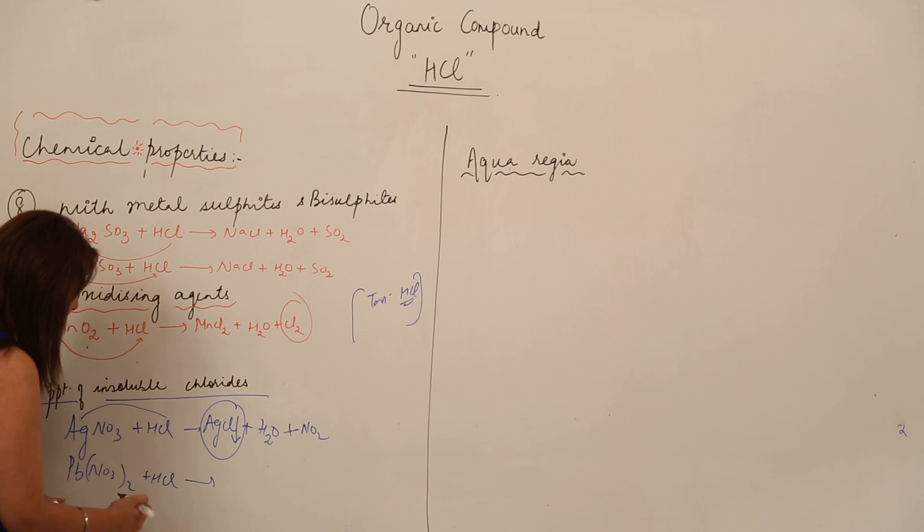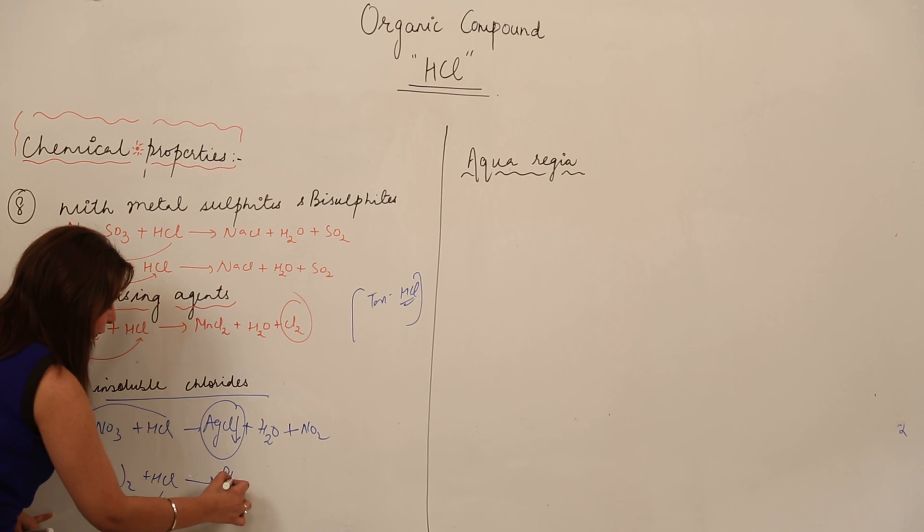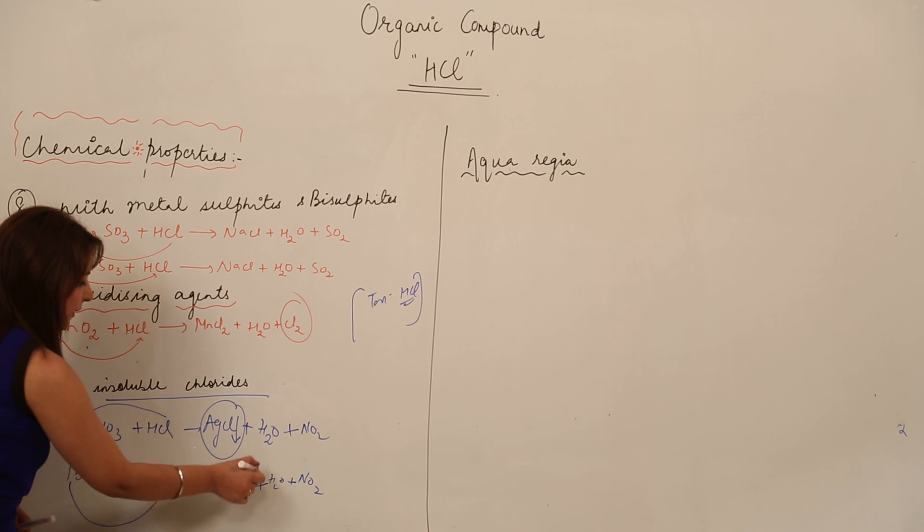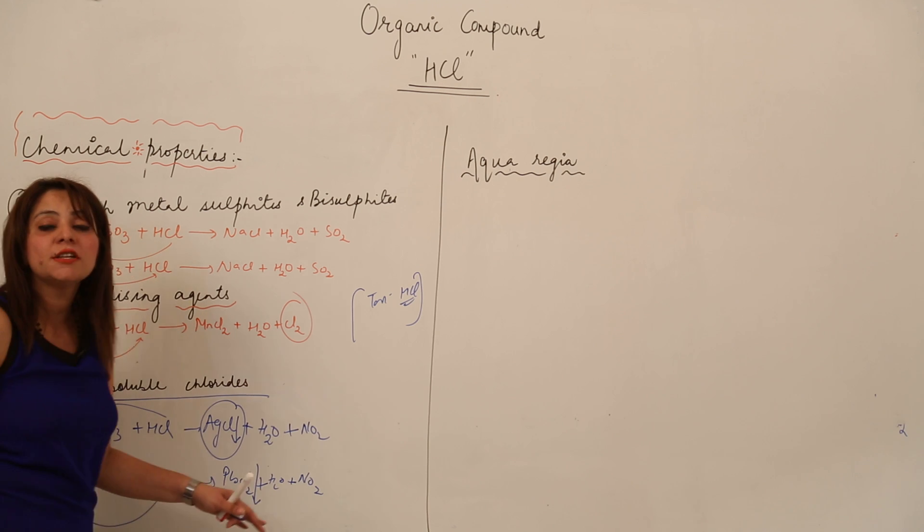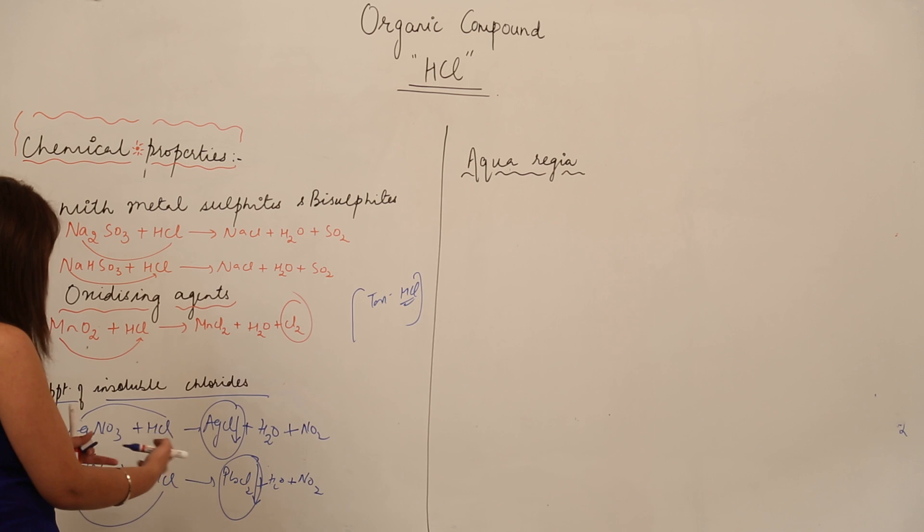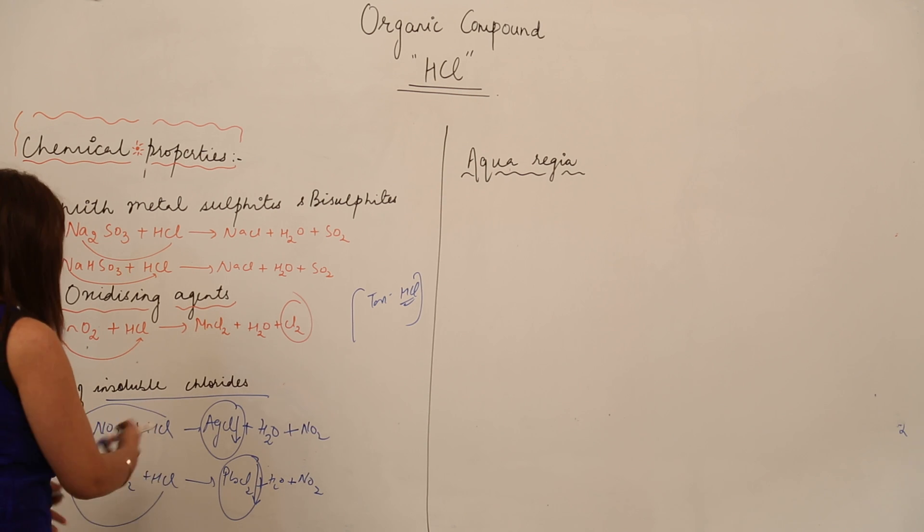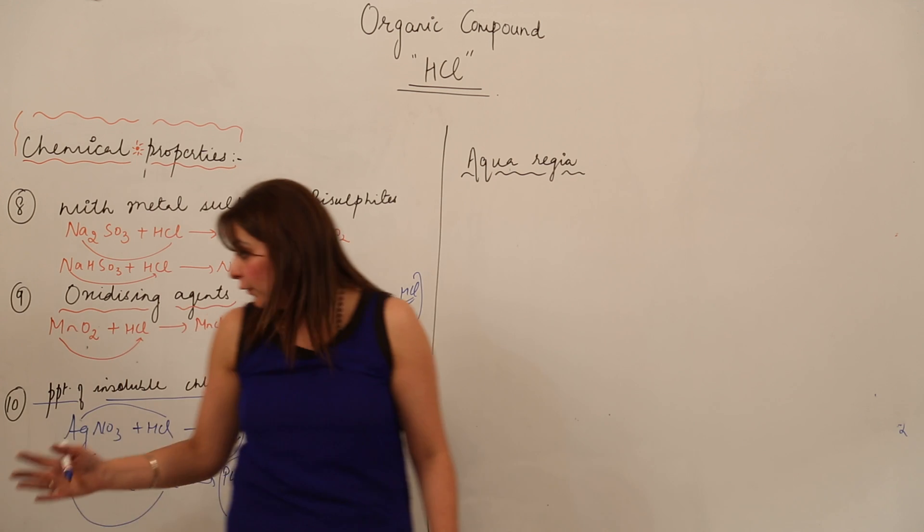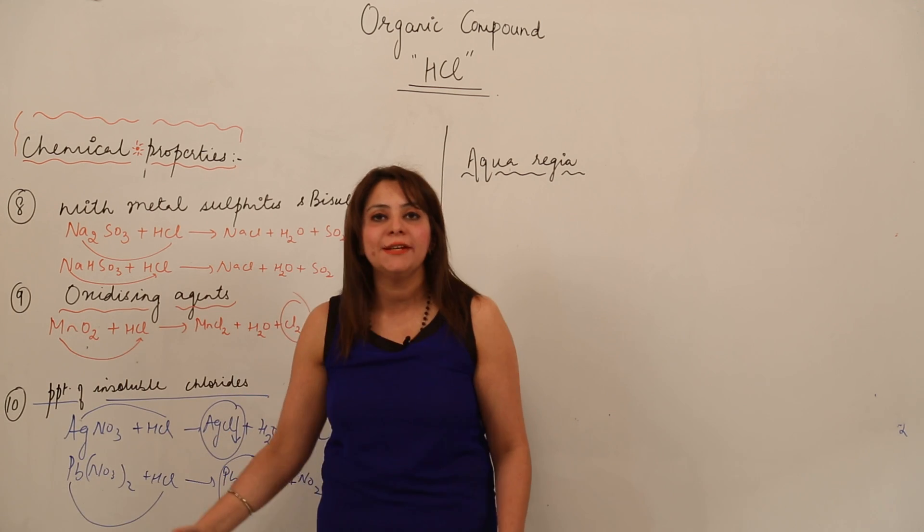The same happens with lead nitrate. It forms lead chloride and releases the same gases because both are nitrates. This is left behind as an insoluble precipitate. This reaction shows they can form precipitates of insoluble chlorides when reacted with silver nitrate and lead nitrate.